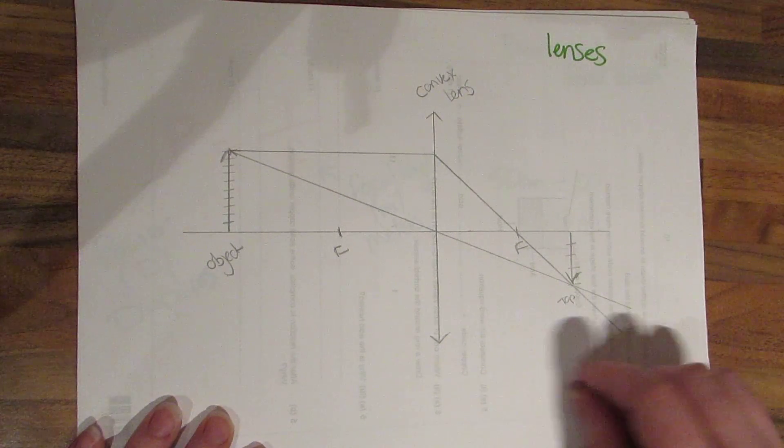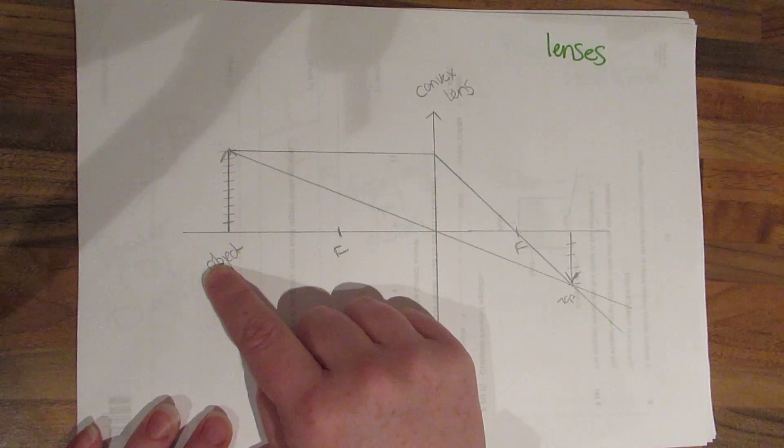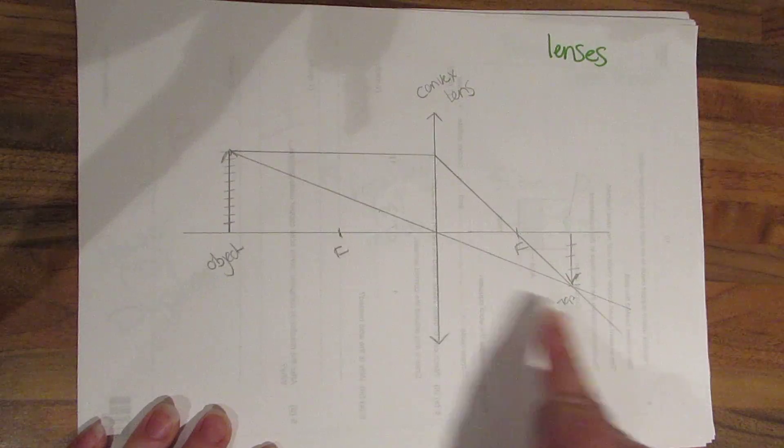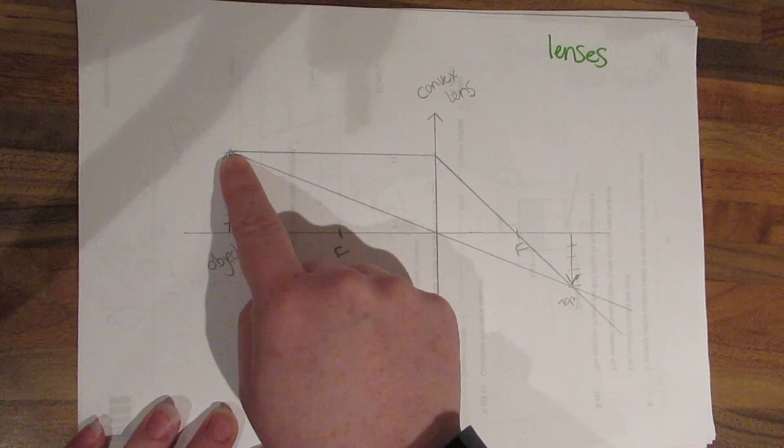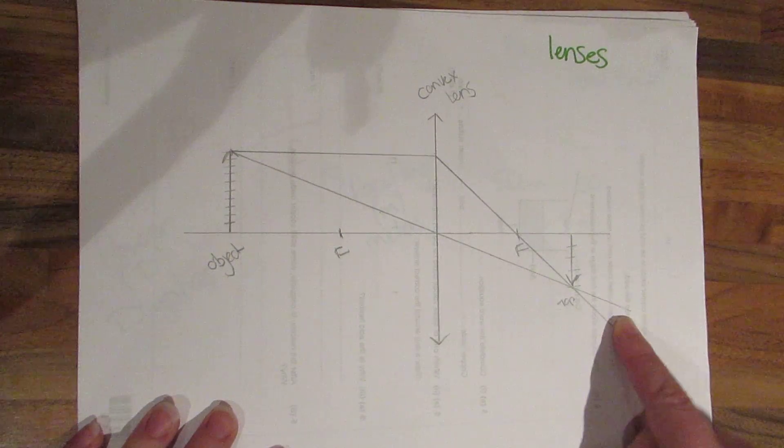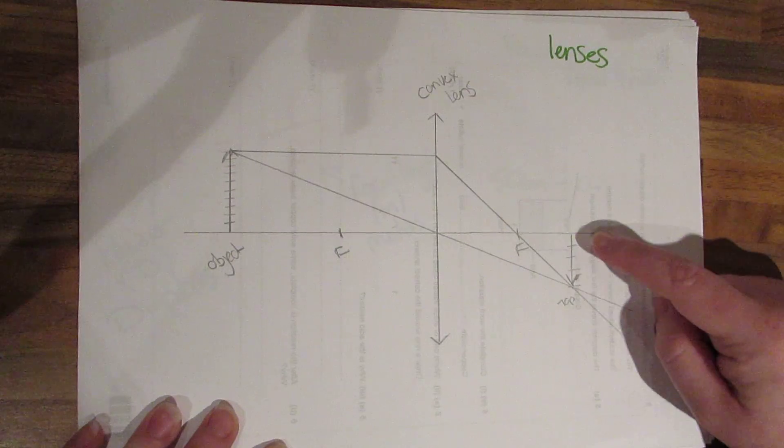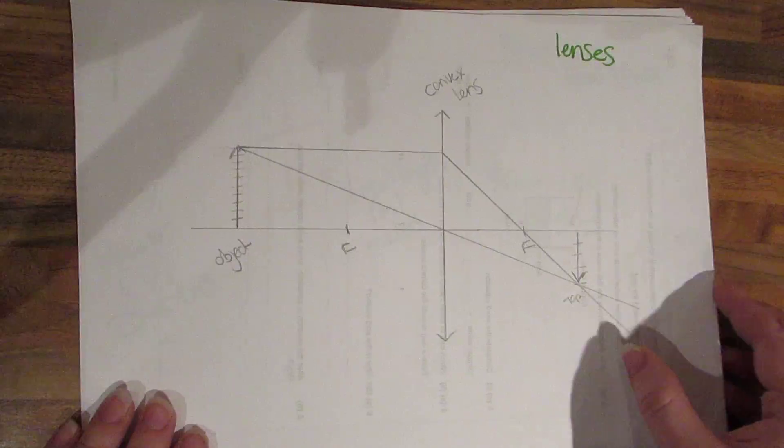Again here we have a converging lens but the object is much further over here. So from the top of the lens across down through the focal point, from the top of the object through the middle of the lens down and where these points cross is going to be the top of the image. This is inverted, it is real and is smaller.